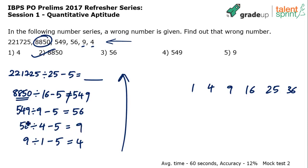549 by 9 is 61, minus 5 is 56. Then whatever divided by 16 minus 5 gives you 549 — that's the correct number. Anyway, 8850 is the answer — 8850 is the wrong number.